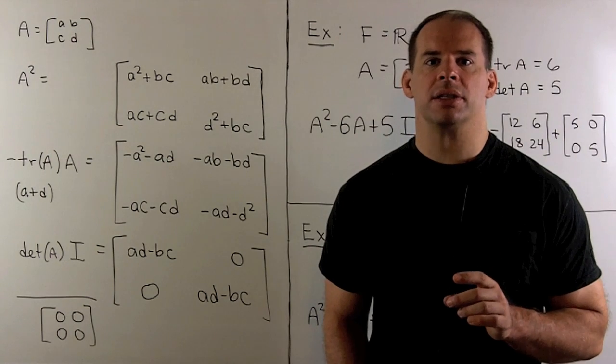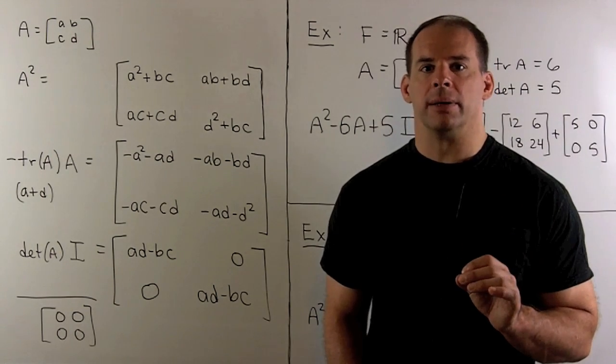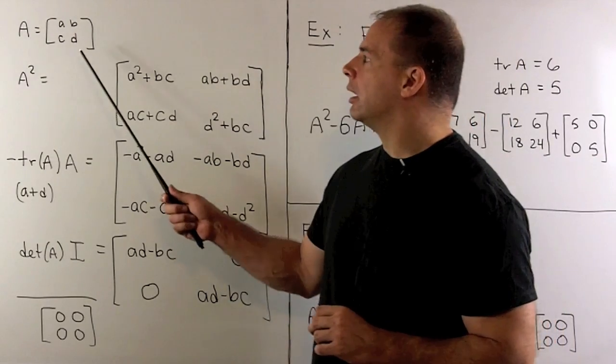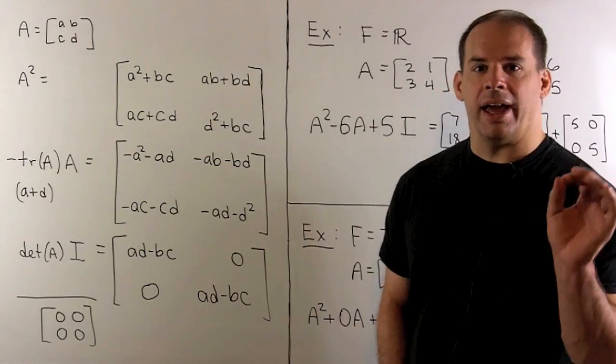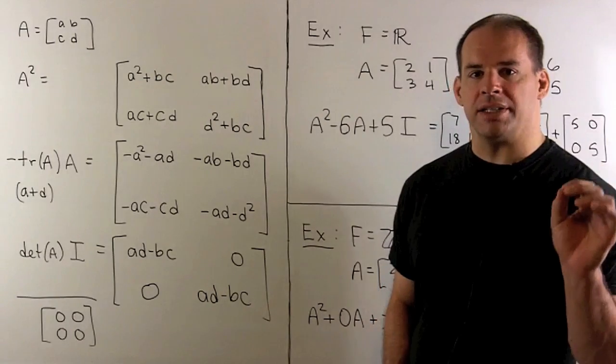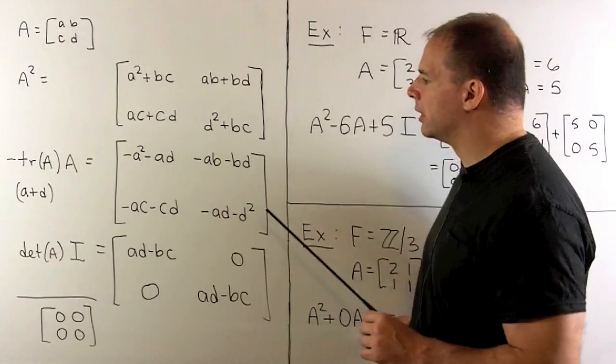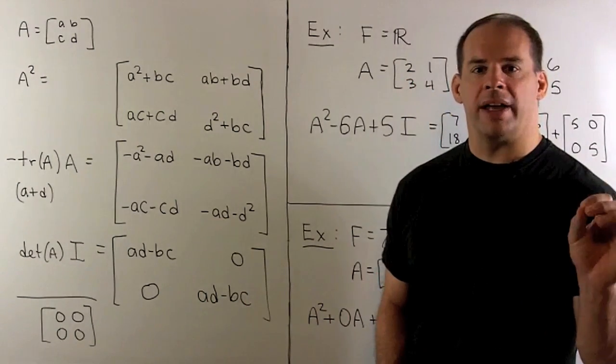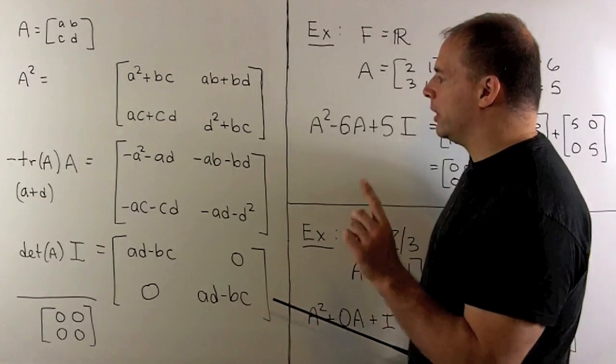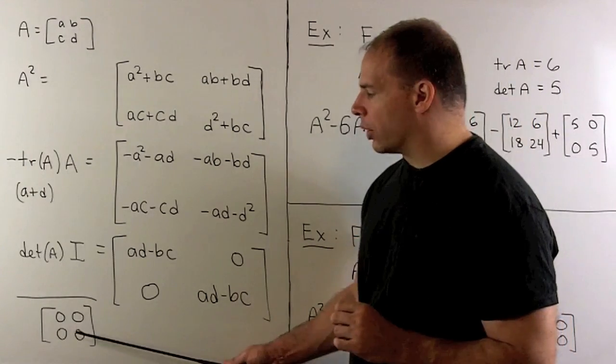Since we're in the 2x2 case, we can show our result directly. So, if I let A be equal to [a b; c d], we take A squared, minus trace of A times A, and the determinant of A times the identity matrix. We add, and then we note what comes out is the 0 matrix.